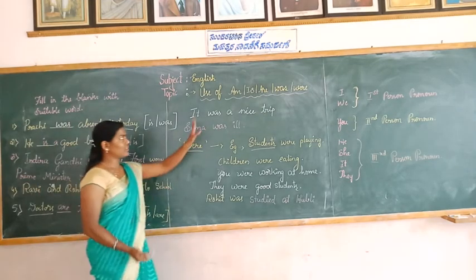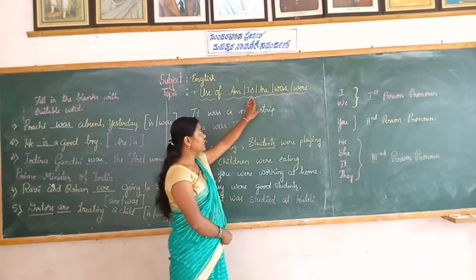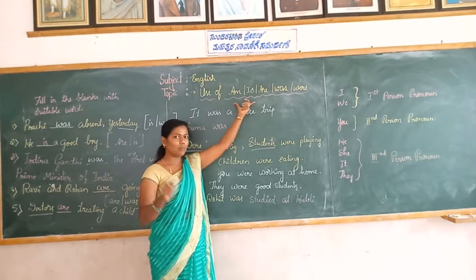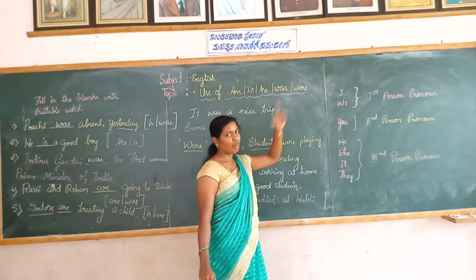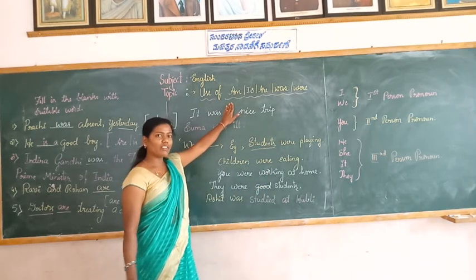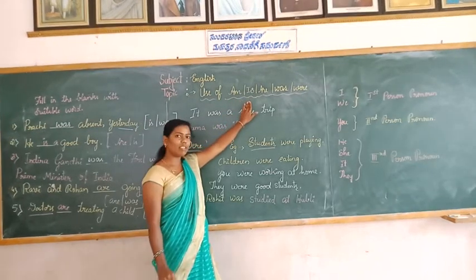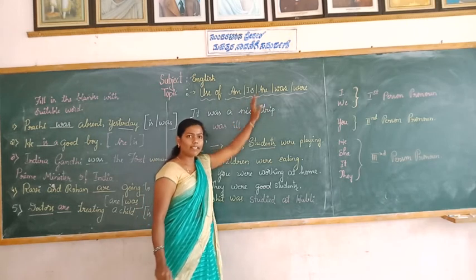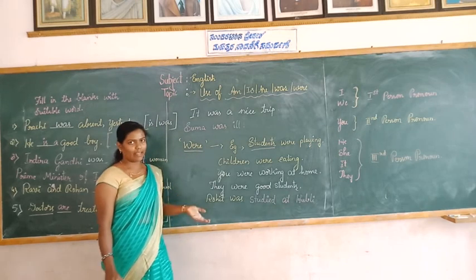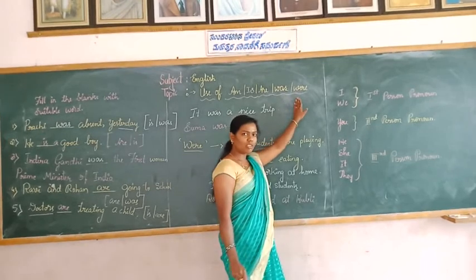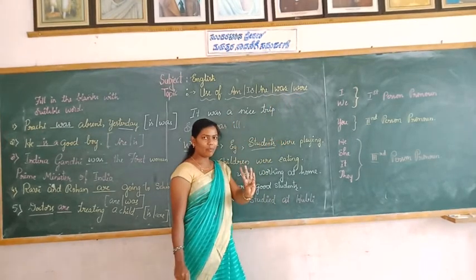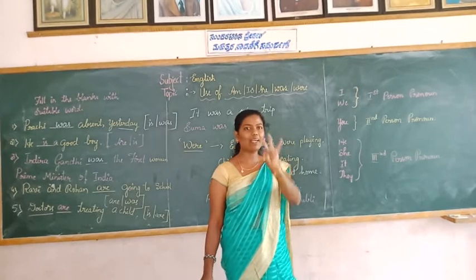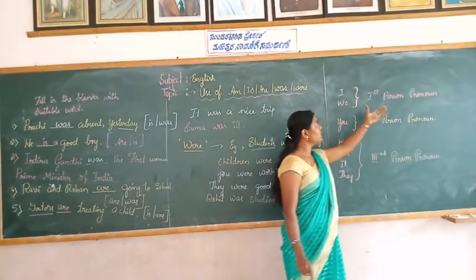Dear students, we have discussed the use of am, is, are, was and were. Am, is, and are are used in the present tense. Was and were are used in the past tense. 'Am' is always used with 'I'. 'Is' is always used with he, she, it, and name of a person, place, or thing. 'Are' is used with you, we, they, and plural forms. 'Was' is used with I, he, she, it. 'Were' is used with plural forms — we, they, you. We and I are called first person pronouns.